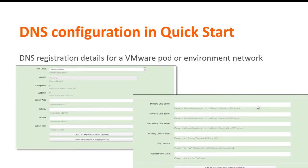Using quick start, you can now configure the DNS registration details for the VMware pod or environment network. On the quick start home page, if you're configuring a new VMware setup on the new network pod page, you can click the add DNS registration details button to add the DNS registration details.